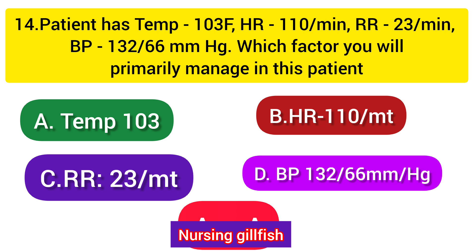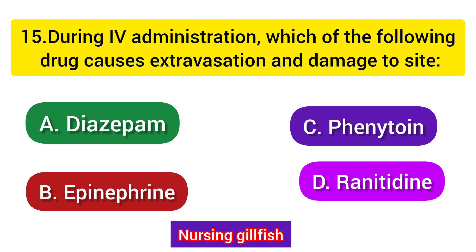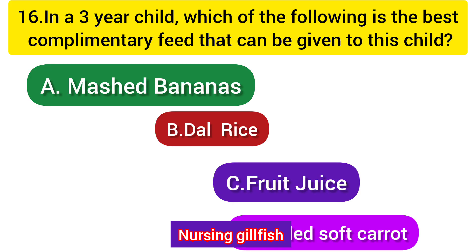Next question: During IV administration, which of the following drug causes extravasation and damage to the site? Option A: Diazepam, Option B: Epinephrine, Option C: Phenytoin, Option D: Ranitidine. The correct answer is Option C - Phenytoin, as it can cause extravasation and tissue damage at the IV site.